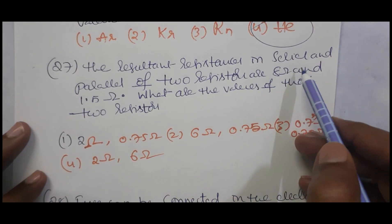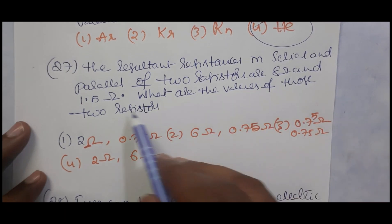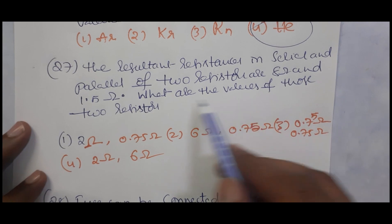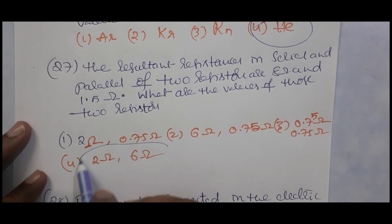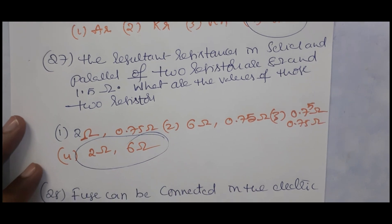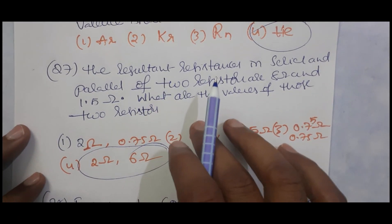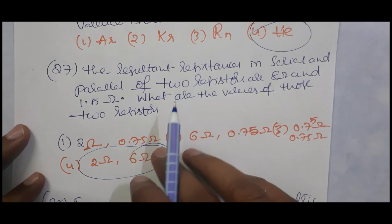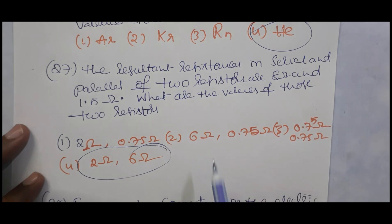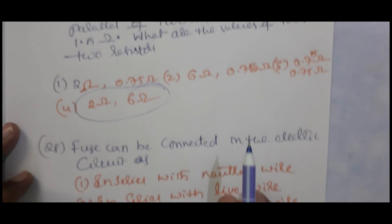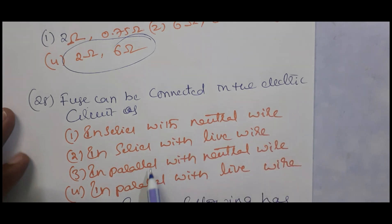The resultant resistances in series and parallel of two resistors 8 ohms and 1.45 ohms — what are the values of those two resistors? The explanation for this question can be seen in the short video we uploaded separately.